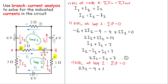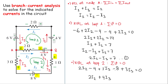The loop enters the 8-volt battery from the negative terminal, so minus 8. Then the loop enters the 3-ohm resistor from the positive terminal, so plus 3 times i3. All equals zero. Collecting terms: 2i2 plus 4i3 equals 12. This is equation number two.